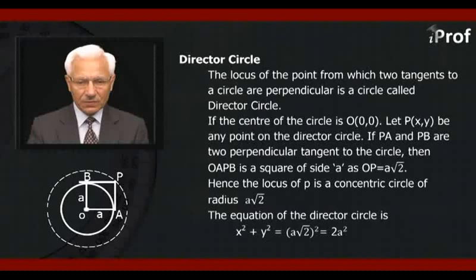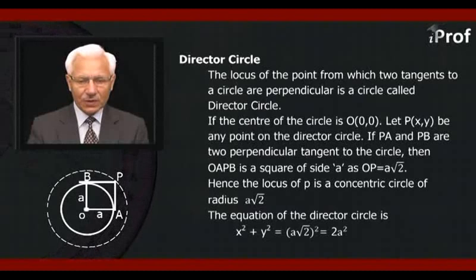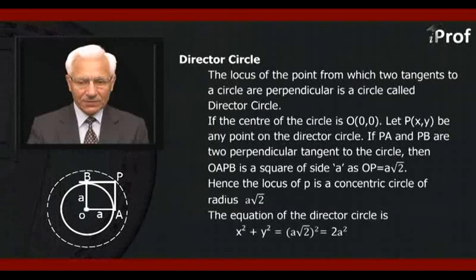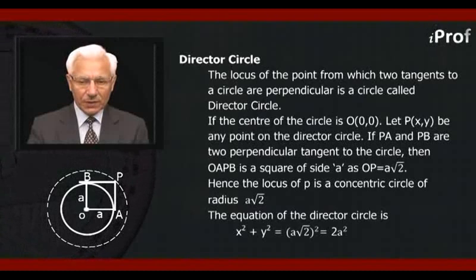Therefore, OP is equal to a√2. Hence, the locus of P is a concentric circle of radius a√2. Therefore, the equation of the directed circle is x² + y² = (a√2)² = 2a².